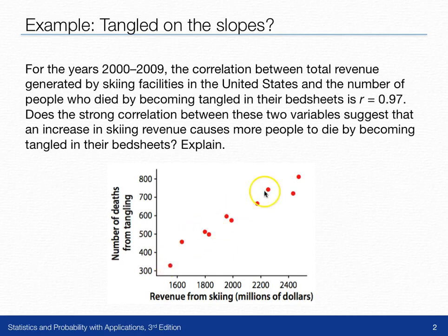This is a strong association. We can see that. There are 10 points here, one for each of the years from 2000 to 2009. The years with lower revenue from skiing tend to have fewer people tangled in their bedsheets.